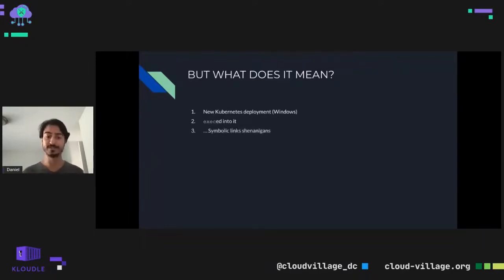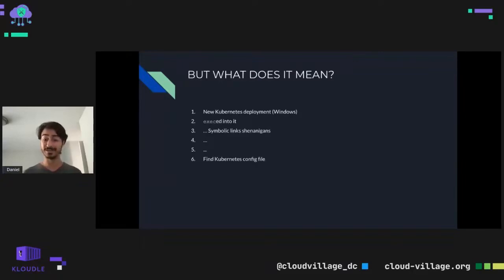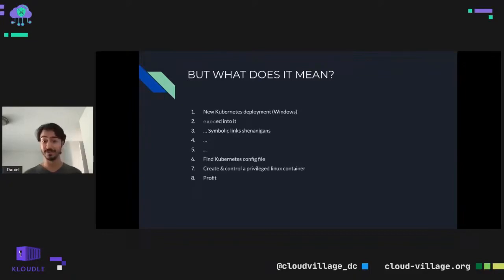After that I used some symbolic link tricks to gain access to the host file system, where the host is the Kubernetes node. Once I gained access to the node's file system, I used the node's Kubernetes config file to impersonate the node to the master API server in order to create a privileged Linux container. Because I created the Linux container, the API server created it on a Linux node. My container packed a reverse shell and once it was up I connected to the shell, gaining access to the Linux node as well, giving me full access to both parts of the cluster.